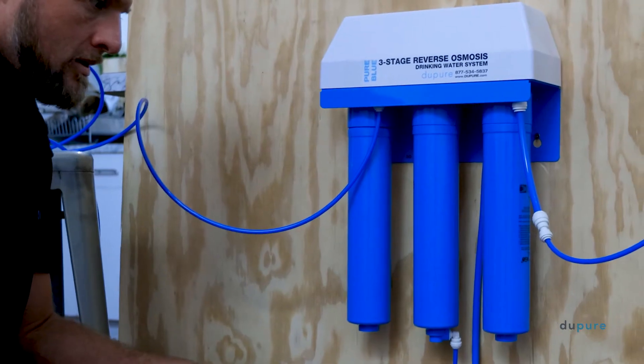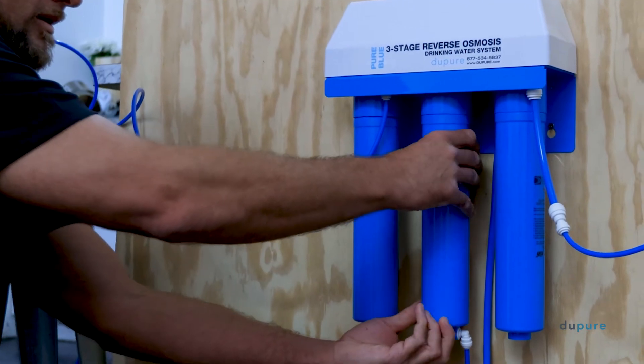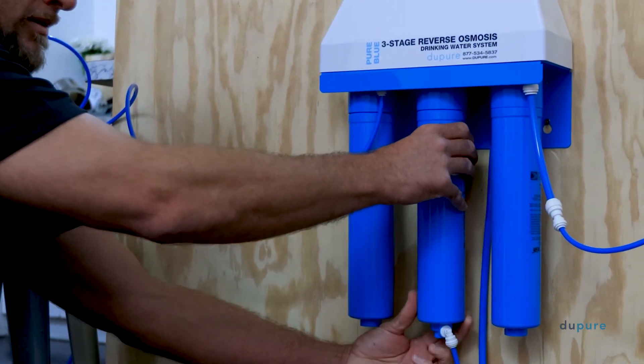Now, you'll remove the old membrane. First, remove the drain line attached to the membrane filter.